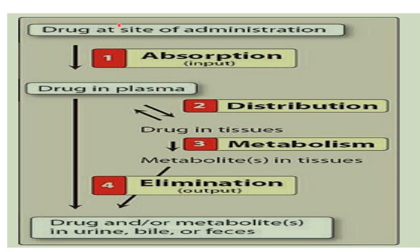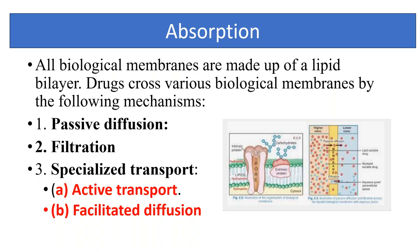After ingestion of the drug, the drug is absorbed from the intestinal mucosa and gets distributed to various parts or compartments of the body. After distribution, the drug gets metabolized, and the last parameter is the elimination of the drug from the body. Now, what is absorption? All biological membranes are made up of the lipid bilayer, and drugs cross these membranes by various mechanisms.